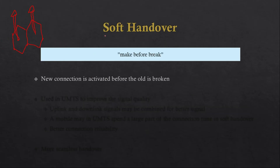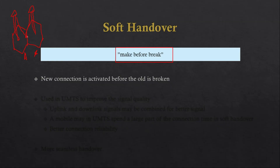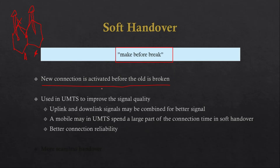Soft handover is a 'make before break' technique. When a user at the boundary of cell A wants to move to base station B, the user receives a signal from base station B for some fraction of time before breaking the connection with base station A. The new connection is activated before the old one is broken. Soft handover is used in UMTS to improve signal quality and is used in WCDMA and CDMA technology, where uplink and downlink signals may be combined for better signal quality.